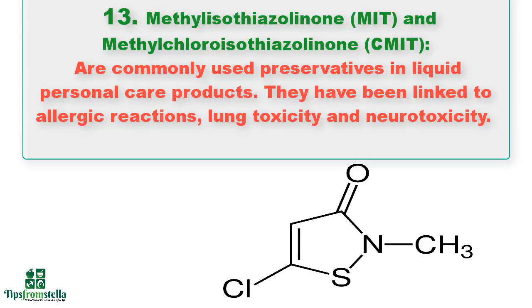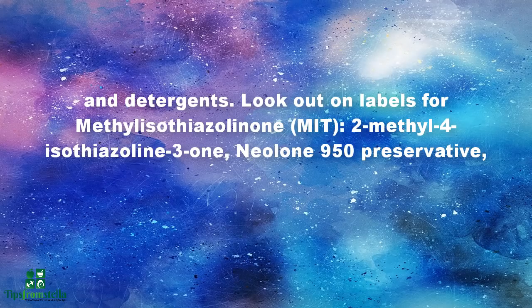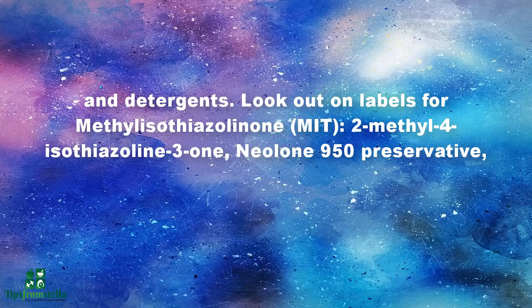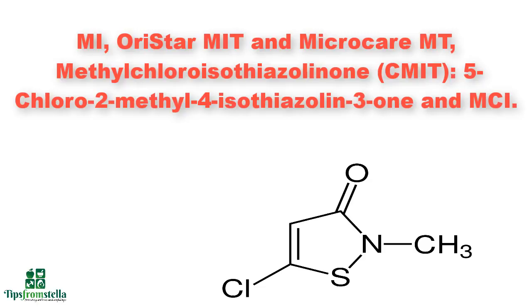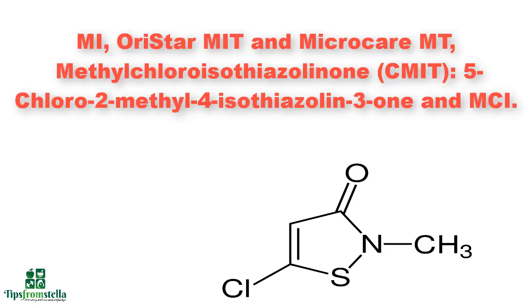Number thirteen: methylisothiazolinone (MIT) and methylchloroisothiazolinone (CMIT). These are commonly used preservatives in liquid personal care products. They have been linked to allergic reactions, lung toxicity, and neurotoxicity. Found in shampoos, conditioners, hair colors, body wash, lotions, sunscreens, mascara, shaving cream, baby lotions, hair spray, makeup removers, liquid soaps, and detergents. Look out for methylisothiazolinone, MIT, neolone 950 preservative, MI, and micro care MT on labels.